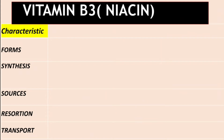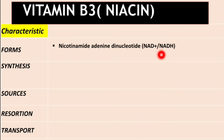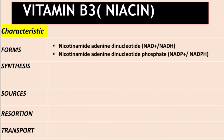Let's start with the characteristics of Vitamin B3. The active forms are nicotinamide adenine dinucleotide — that's NAD+ and NADH. NAD+ is the oxidized form and NADH is the reduced form. The second active form is nicotinamide adenine dinucleotide phosphate — that's NADP+ and NADPH.